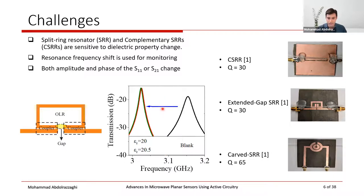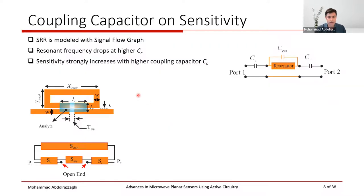Two major solutions are proposed: increasing sensitivity and increasing resolution so sensor responses can be separated. In passive sensors, the normal design uses a split-ring resonator coupled to a pair of transmission lines. Quality factors are low to moderate and sensitivities are limited because the external material's fraction relative to the internal capacitance of the SRR is negligible, so the sensor cannot discern sensitive environmental variations.